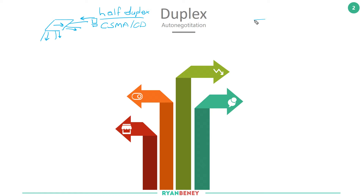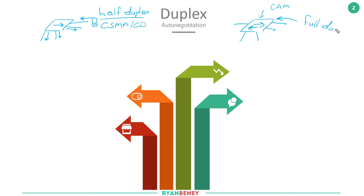As time moved on, switches came out and gave everyone their own collision domain. This means that when traffic was sent into a particular port it wouldn't be sent out blindly to all other ports. The switch has a CAM table with a list of MAC addresses and identifies which port traffic should and shouldn't be sent out of. Because of this improvement — everyone having their own collision domain — we now had the ability for full duplex, meaning someone on the wire can send and receive at the same time.